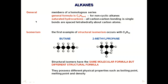From GCSEs or year 10 and 11, the general formula for alkanes is CₙH₂ₙ₊₂, and they are non-cyclic alkanes. They are also saturated hydrocarbons, meaning all carbon-carbon bonds are single bonds — they don't have a double bond or a triple bond.